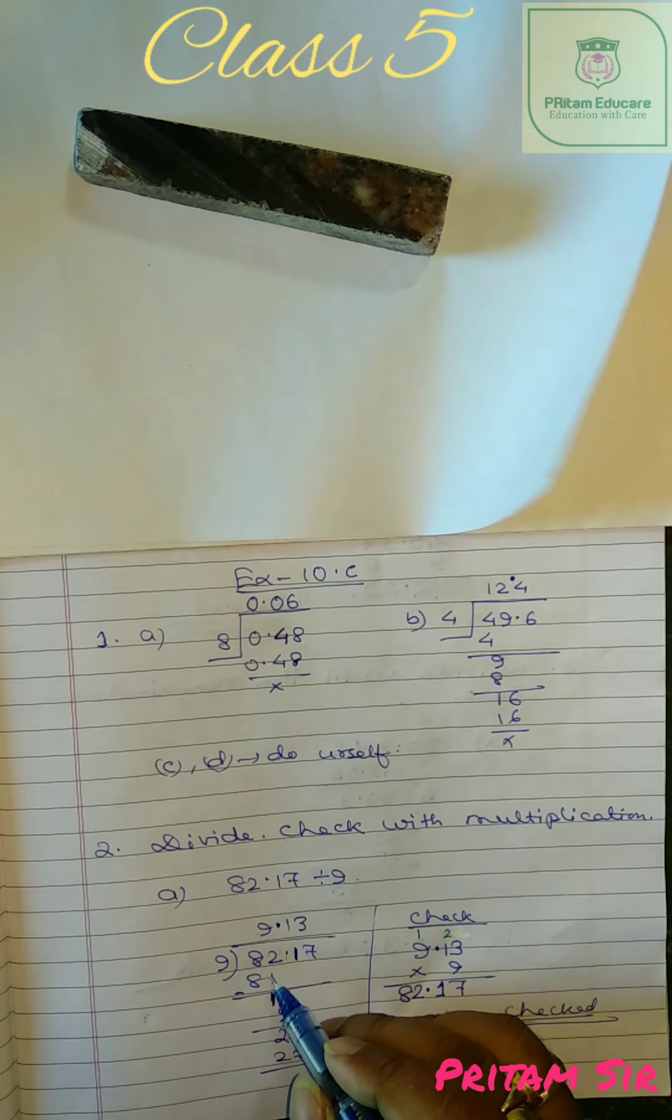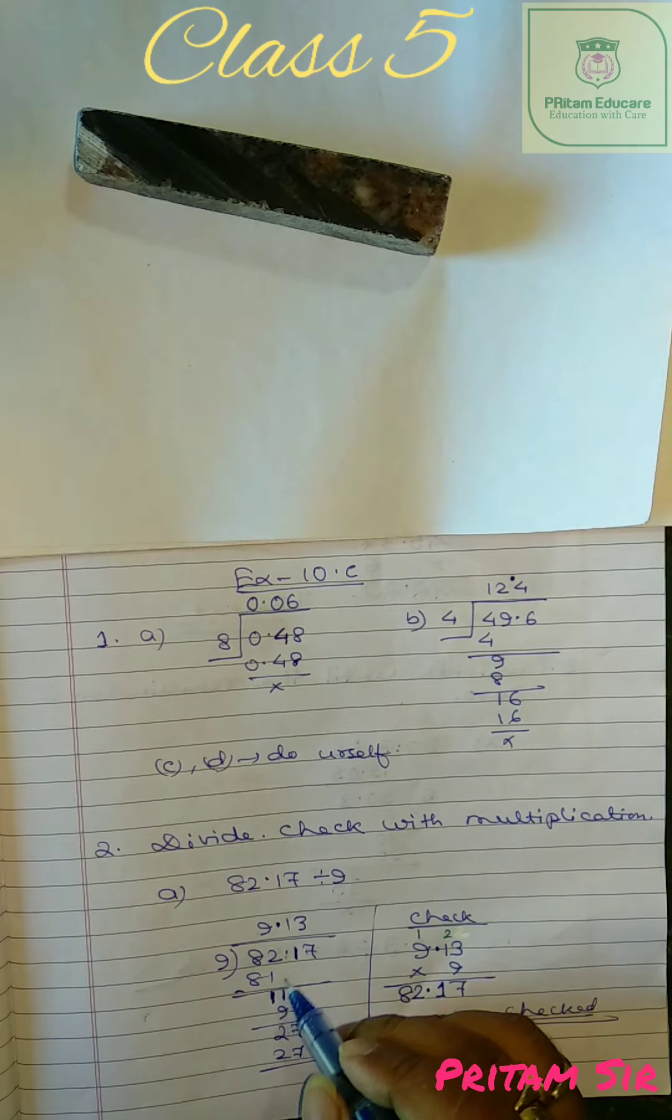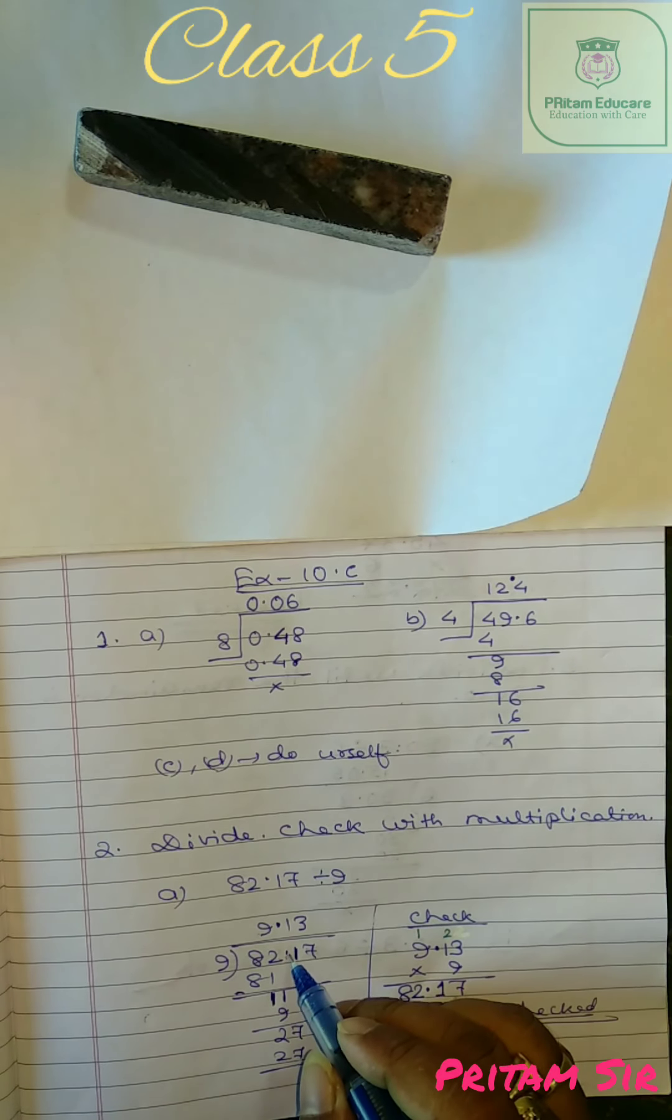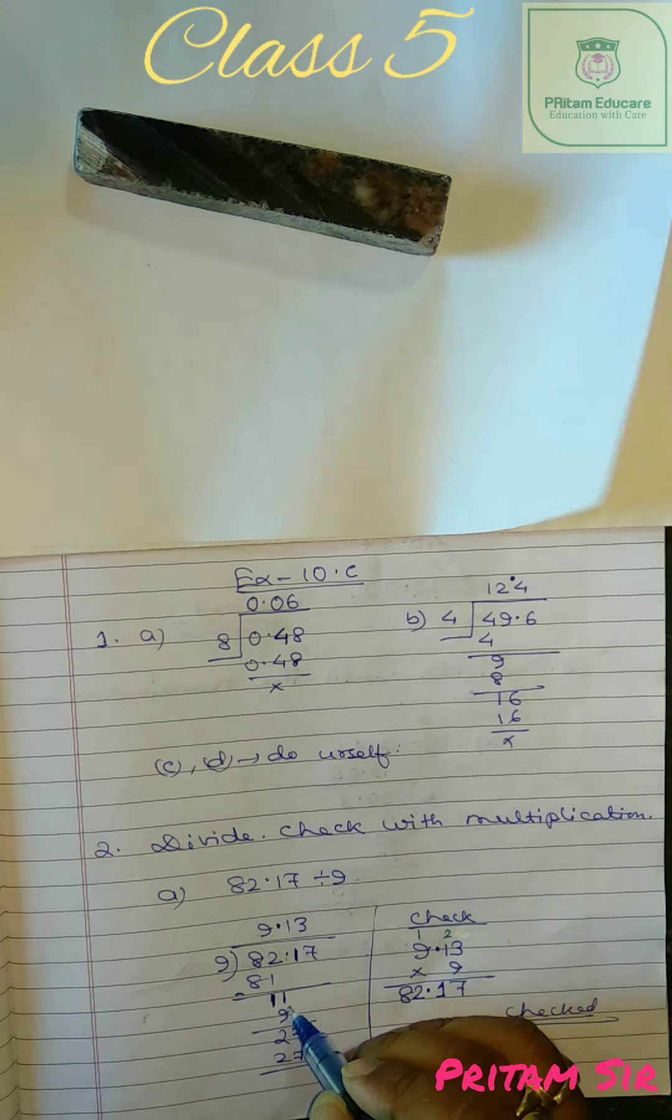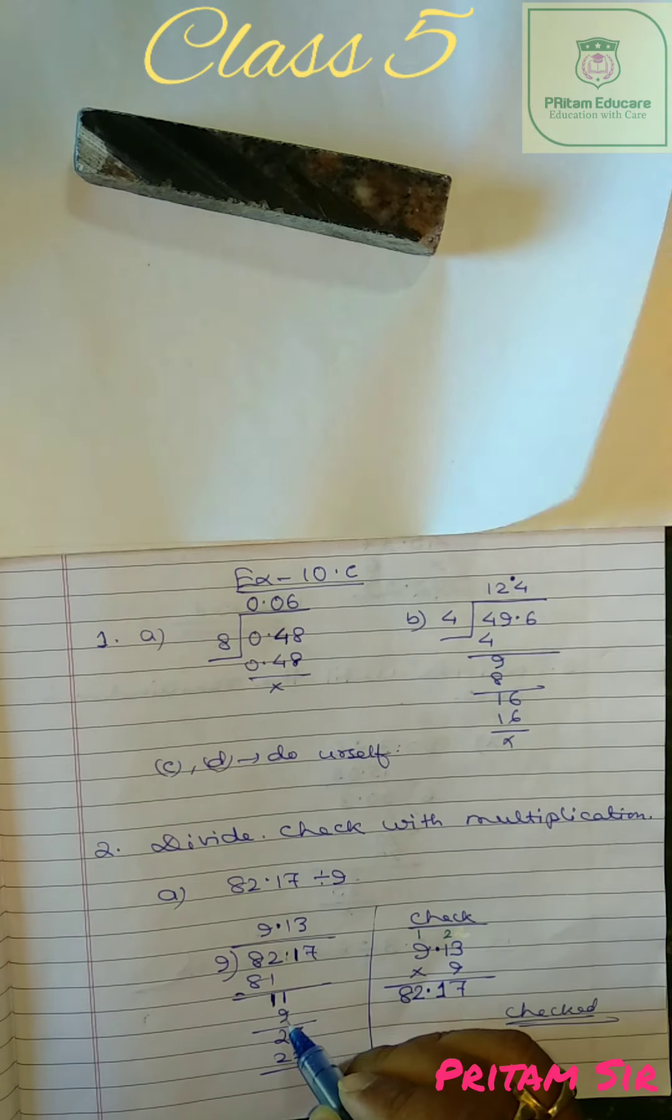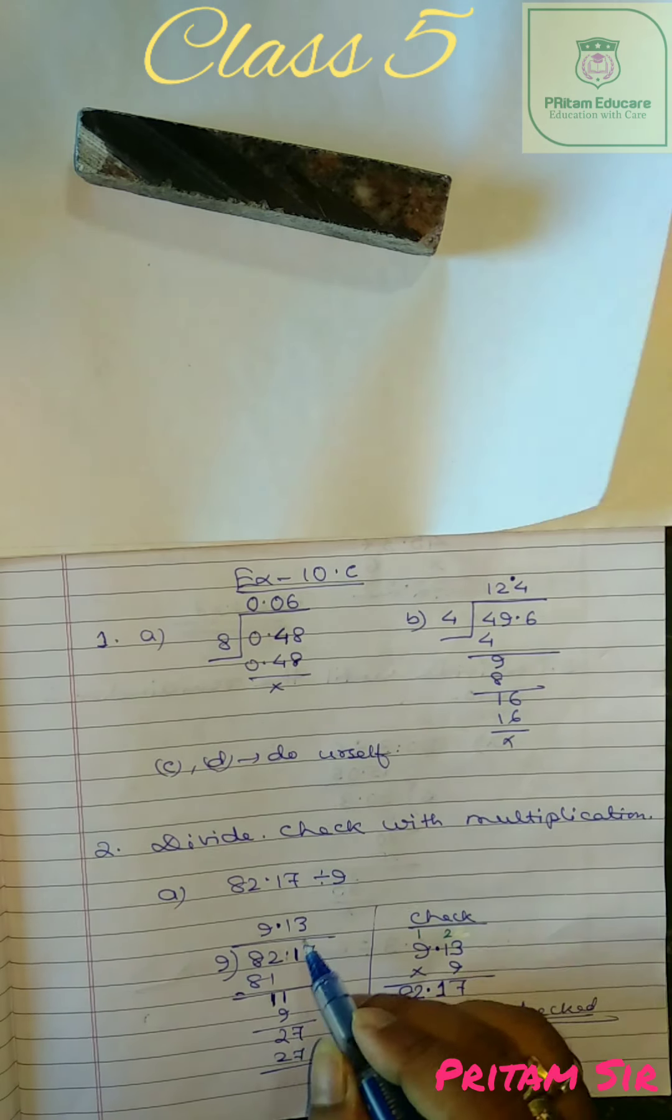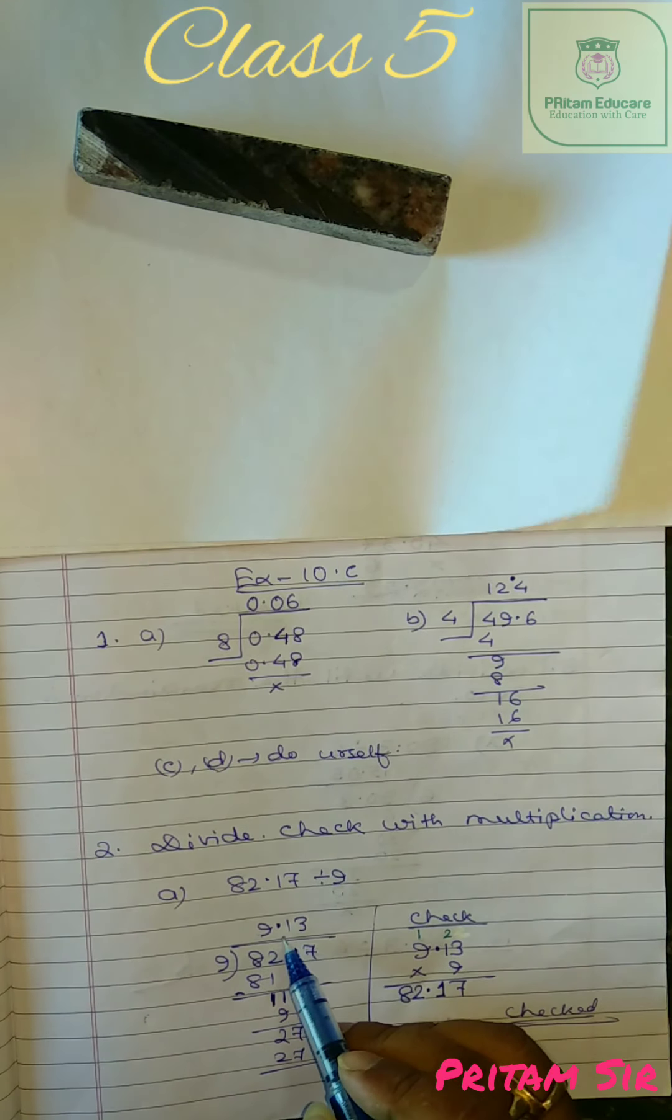Now next when this one will come down the point will shift here. 2 minus 1 is 1 we got and then when this one will come down this point will shift to after 9. Now we got 11. 9 into 1 is 9, 11 minus 9 is 2. 3 into 9 is 27. So our answer is 9.13.